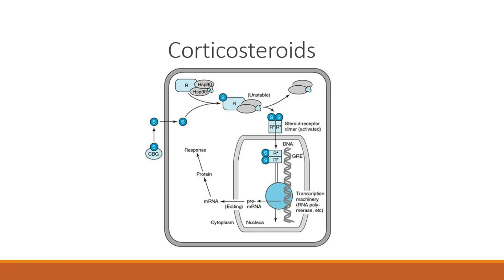Let's look into the mechanism of action in a little bit more detail. Cortisol is bound onto corticosteroid-binding globulin in the blood — about 75% of it is bound to this protein. The remaining 25% is bound to albumin, and only about 1% of cortisol is free. But it's the free cortisol that is the active cortisol — that 1% that is not bound onto a protein is the cortisol that will lead to a response.